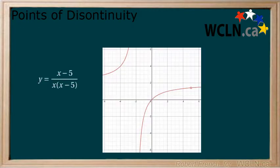A point of discontinuity is created when there is a common factor between the numerator and denominator. Take a look at the following function and its graph. We can see that there is a common factor of x minus 5, and that when we look at the graph there is a hole at x equals 5.